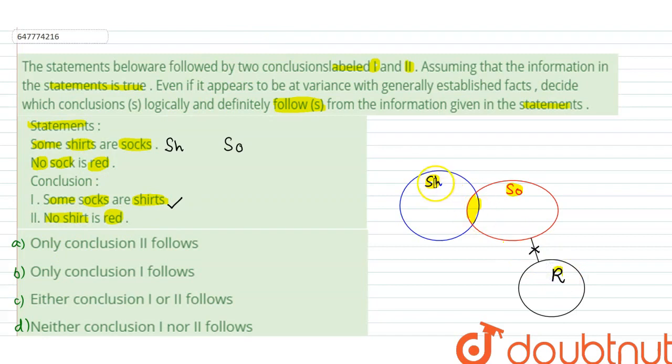No shirt is red - what can we tell about shirts? We can find that the shirts that are socks are not red, but what about the other shirts? For the right region of this diagram, can we find something about this region? This region has no certainty, and when we don't have certainty, then this conclusion is wrong.